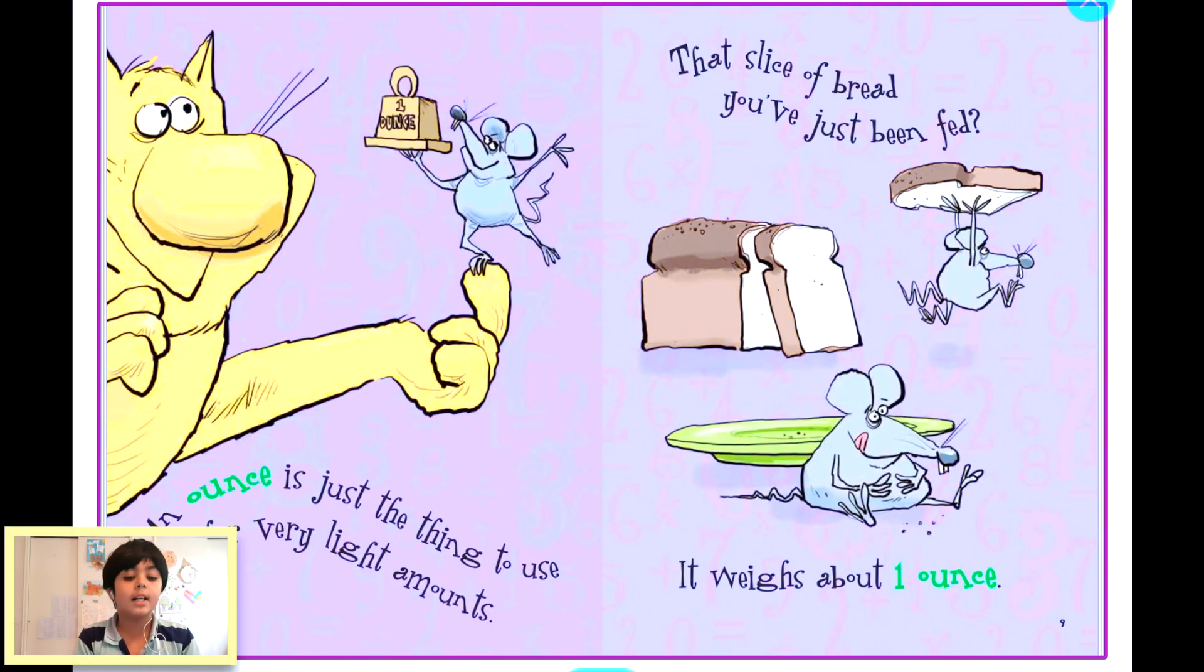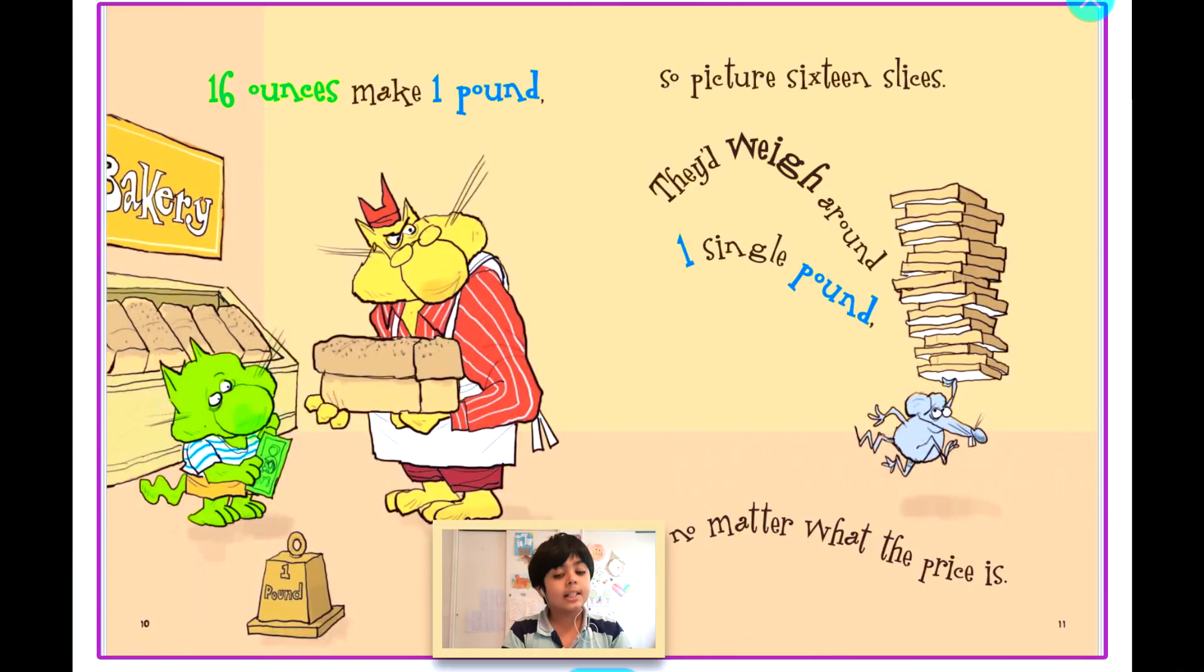That slice of bread you've just been fed weighs about one ounce. And a mouse—I don't know what that is, I think that's a cat. The yellow thing is holding a mouse and the mouse is holding like one ounce.